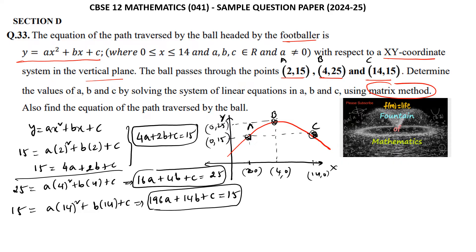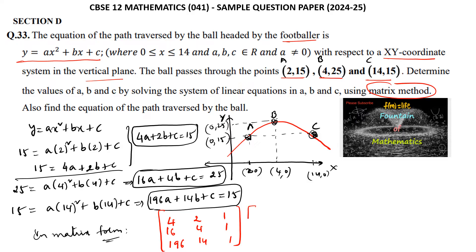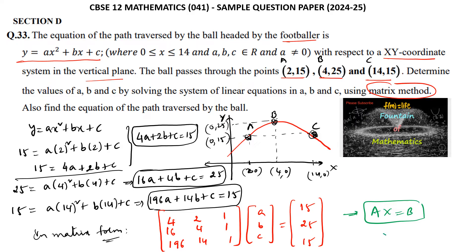Representing the three equations in matrix form: the coefficient matrix is [4, 2, 1; 16, 4, 1; 196, 14, 1], the variable matrix is [a, b, c]ᵀ, and the constant matrix is [15, 25, 15]ᵀ. This is in the form AX = B, and to solve it we apply X = A⁻¹B using the inverse method.